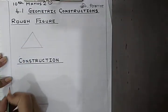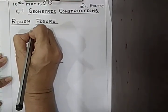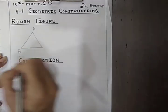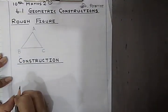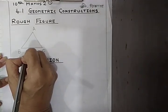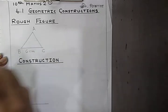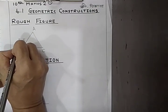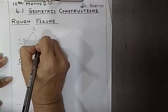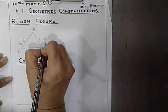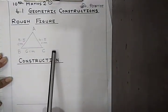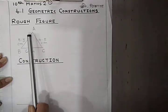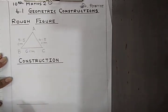This is triangle ABC. Though the figure is rough, we have to give names and measurements. So, BC is 6 cm, AB is 5.5 cm, and AC is 4.5 cm. As I have said many times, though the figure is rough, we have to give names and measurements properly.